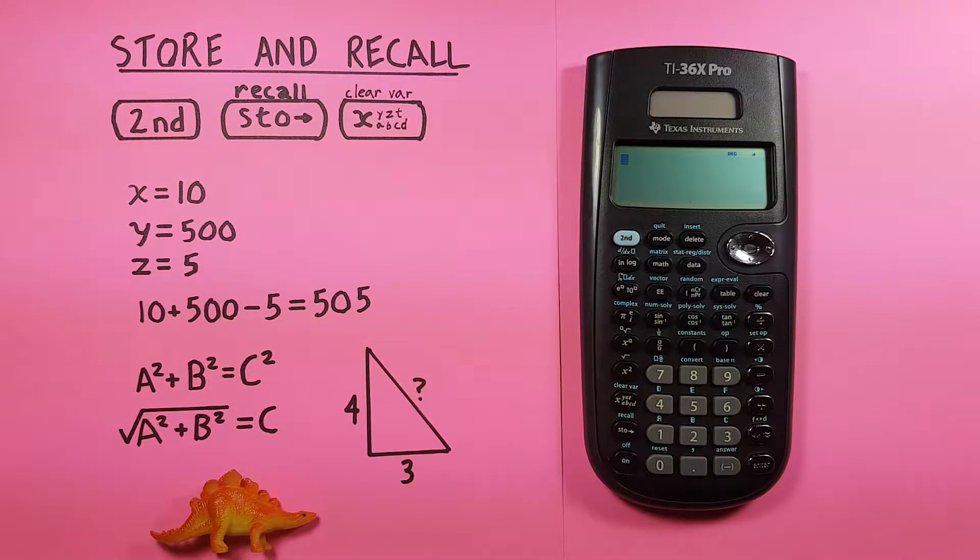So to get started if we just want to store a value on this calculator, say we've calculated something out and we want to store that for later use in a calculation, you place it on the screen, then press the STO key so you get this little arrow going to the right.